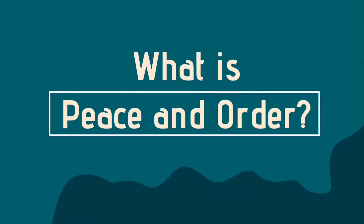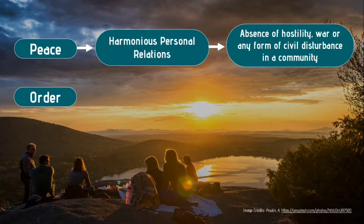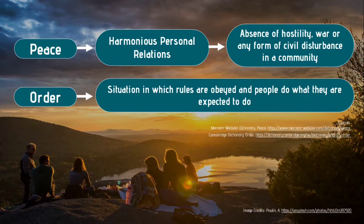We mentioned about peace and order. Let's define these two terms separately. Peace is an encompassing term; thus, it can be defined in many ways. According to Merriam-Webster Dictionary, peace includes harmonious personal relations which lead to an absence of hostility, war, or any form of civil disturbance in a community. Based on this definition, we can see that there is peace when there is no war or fights between people. While order, according to Cambridge Dictionary, is achieved in a situation in which rules are obeyed and people do what they are expected to do. We can now see that these two are related. For example, when people are following the law, there's order, including peace.